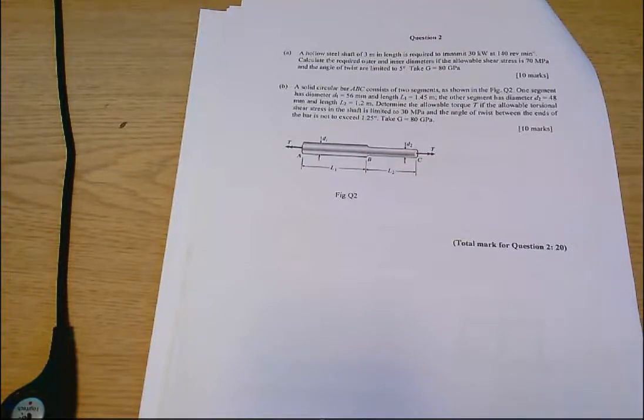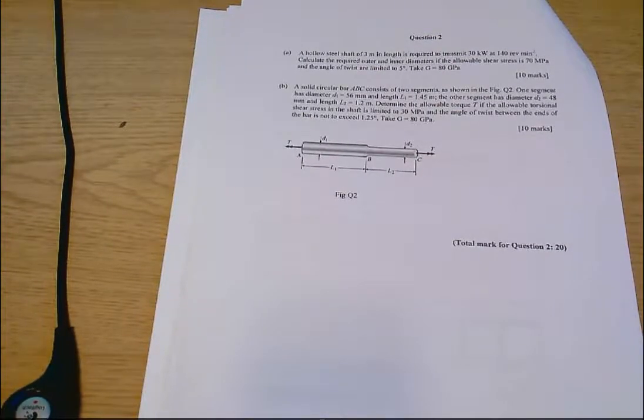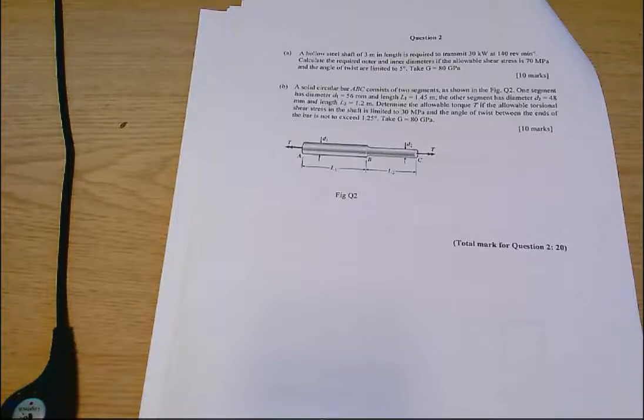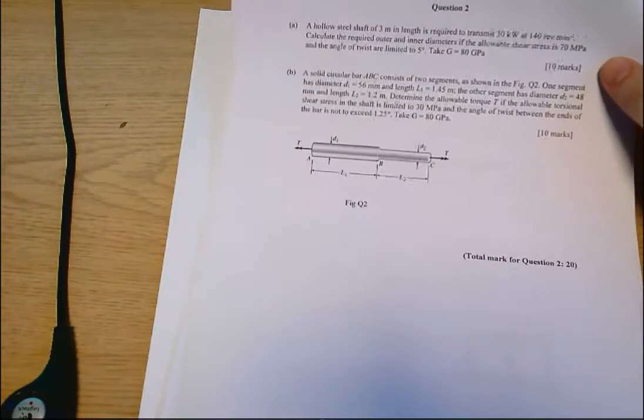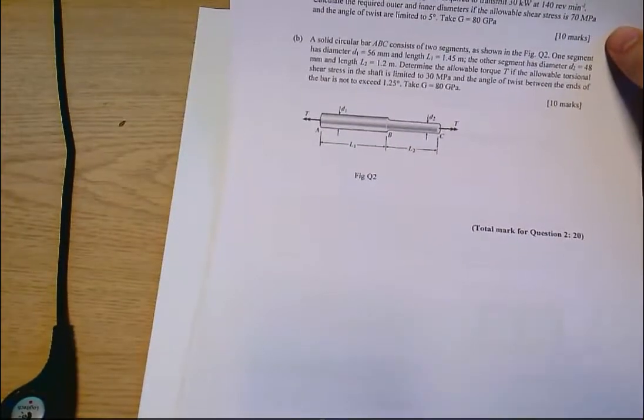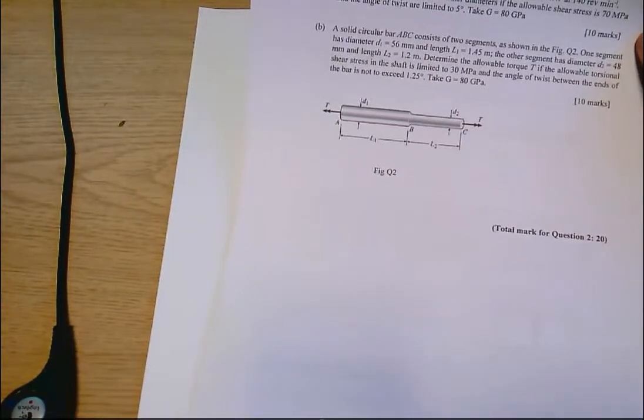This is the 2019 Solid Mechanics Exam, ENG 5443 Question 2, and it's a torsion question. 2A is about a hollow steel shaft and there's some details on there. So let's take a look.